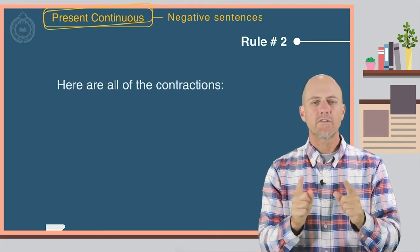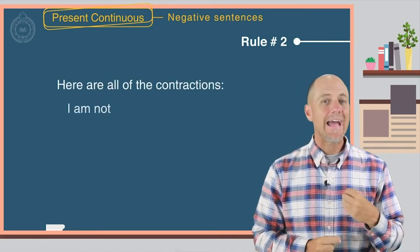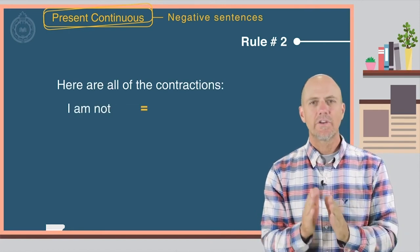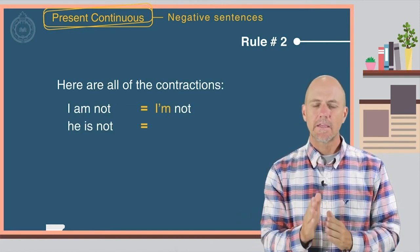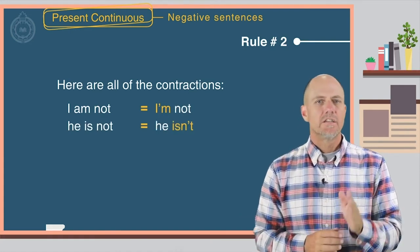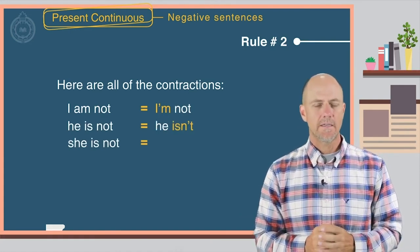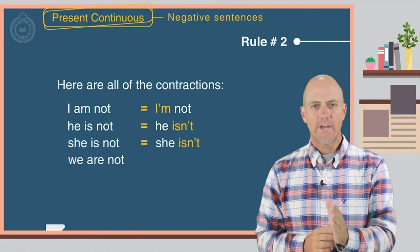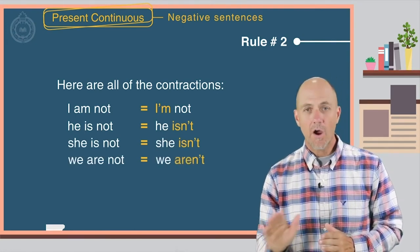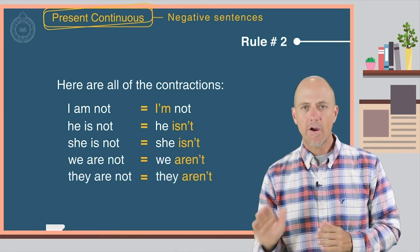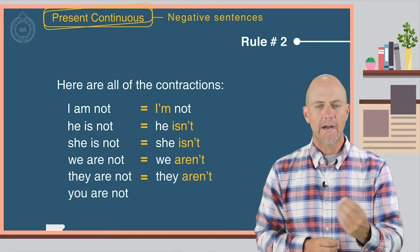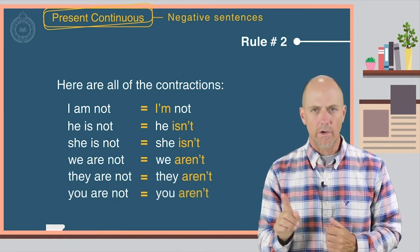Here are all of the contractions. I am not equals I'm not. He is not equals he isn't. She is not equals she isn't. We are not equals we aren't. They are not equals they aren't. And you are not equals you aren't.